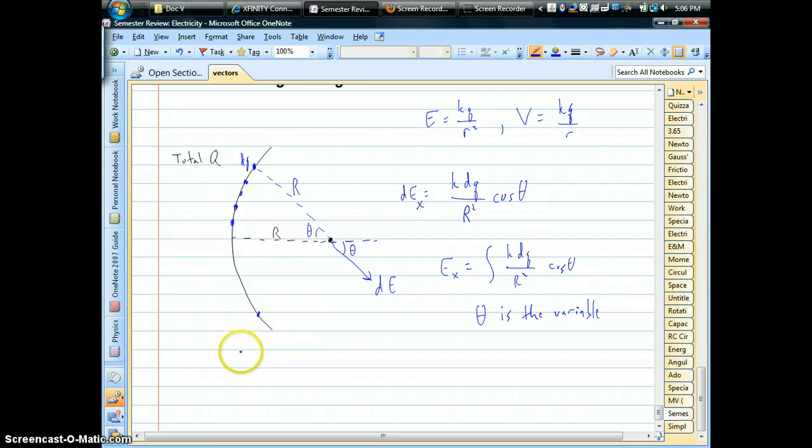Well, usually what's given in one of these problems is our symbol lambda. It's the charge per unit length. This is basically a curved stick, and so the charge is spread uniformly along this stick, charge per unit length. So if we're given this thing, and it's a constant,